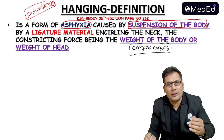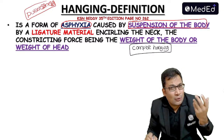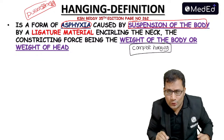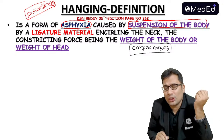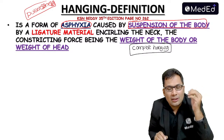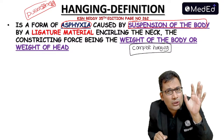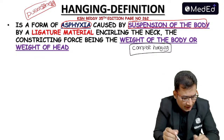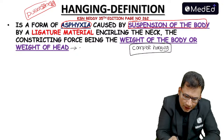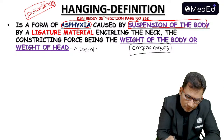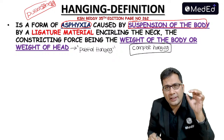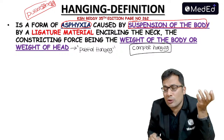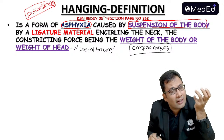Complete hanging means the entire body is suspended, so the weight of the body acts as a constricting force. In case of partial hanging, a body part is touching the ground — either in sitting, standing, or kneeling position — and the constricting force is the weight of the head. In complete hanging, the weight of the body acts as a constricting force; in partial hanging, the weight of the head acts as a constricting force.